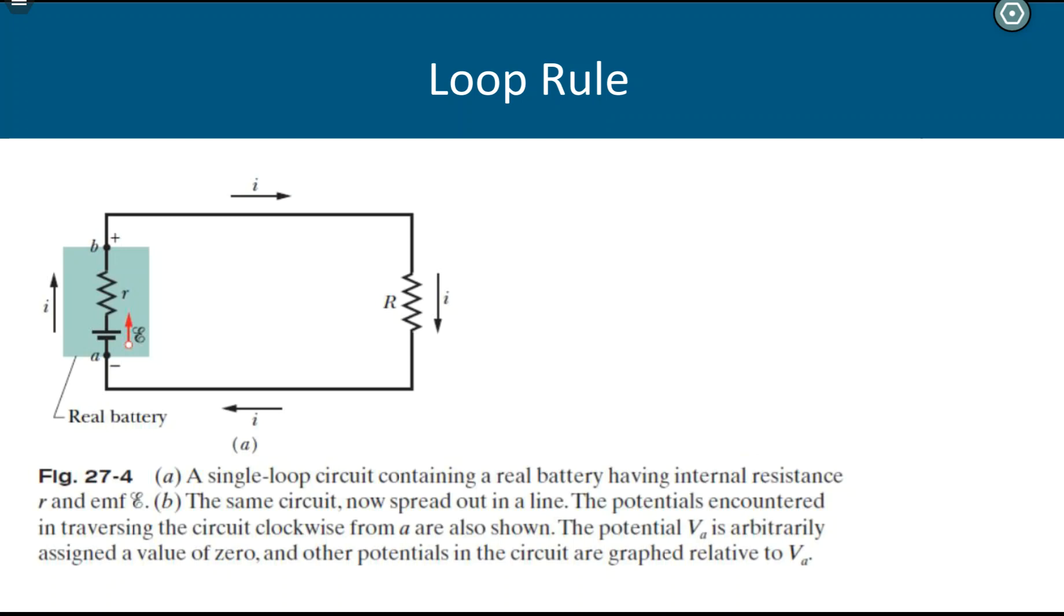Hello. So this is another example of using Kirchhoff's loop rule in a very simple circuit that involves a source of EMF and a load resistor, but this time I am including something that involves an internal resistance.